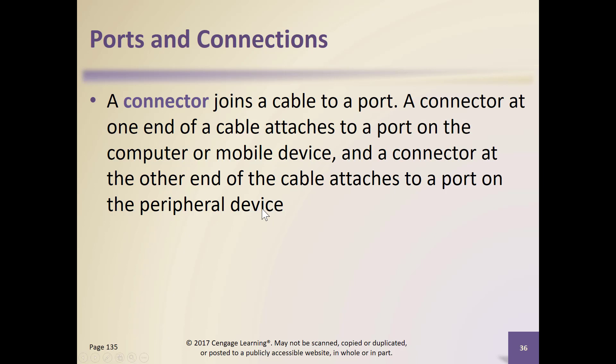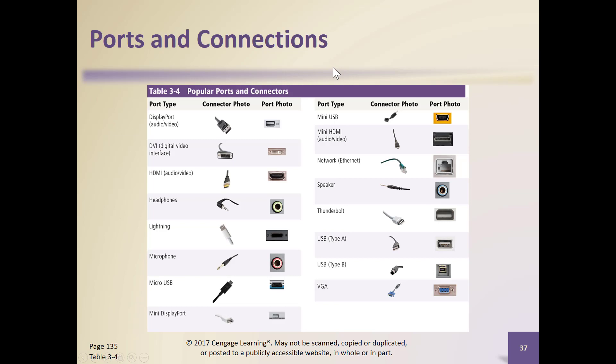Also keep in mind that with these ports we can use what's called a dongle. For example, I have a connector that on one end is a USB port and on the other end is an Ethernet port, because my laptop no longer has a default Ethernet port. We see those a lot in Macs as well, where they have common ports on the computer that can do many things.